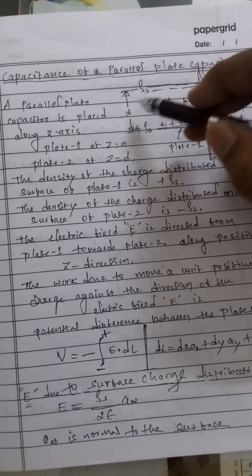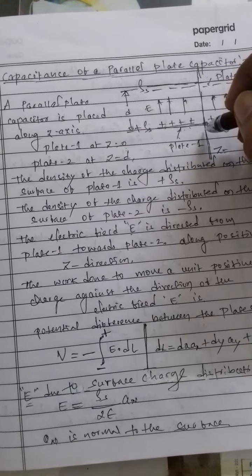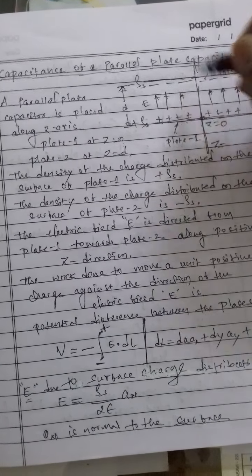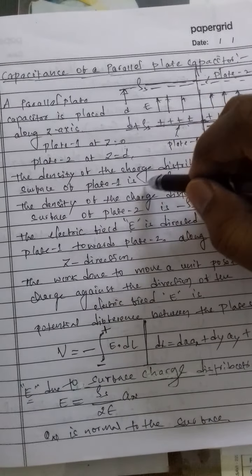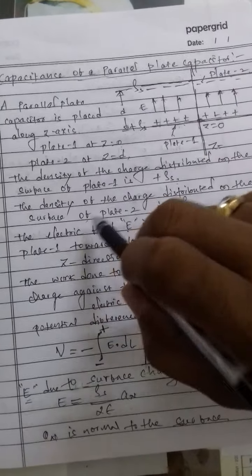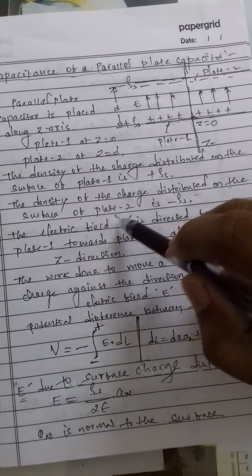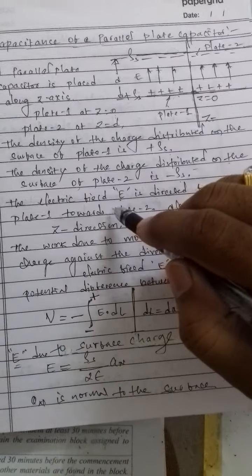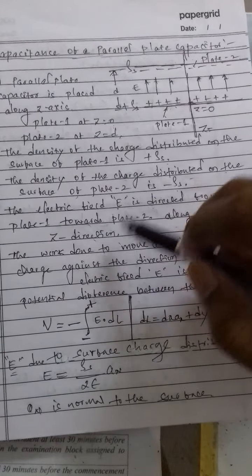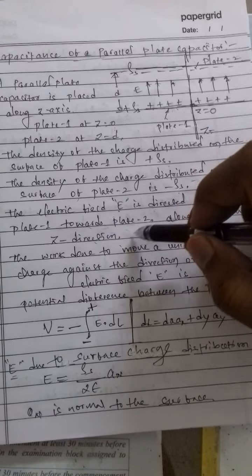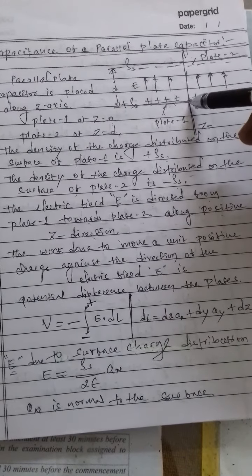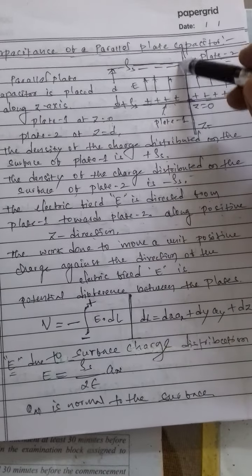The distance between the two plates is d. The charge distribution density on the surface of plate 1 is plus rho_s, and on the surface of plate 2 is minus rho_s. The electric field is directed from plate 1 towards plate 2 along the positive z-direction.